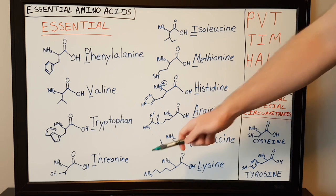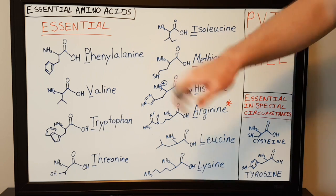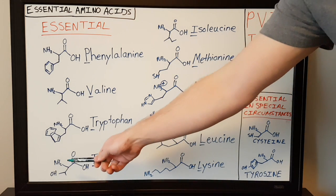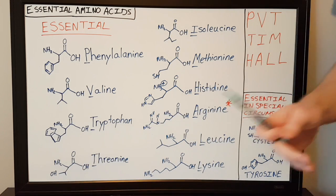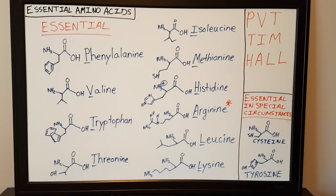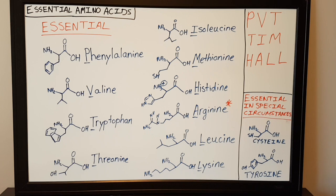The next amino acid is threonine. Its side chain is similar to valine except that one part of the other side of the V is actually a hydroxyl group.